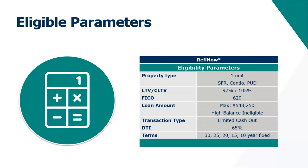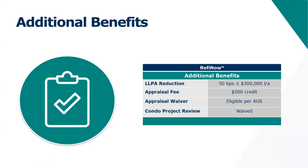There are some additional benefits: the 50 basis points waiver for loan amounts at or below $300,000, the $500 appraisal credit if an appraisal is required, and appraisal waivers are eligible — so if DU offers a property inspection waiver, absolutely use it. Also, for Refi Now, you actually waive the condo project review, which is normally required on condominiums.